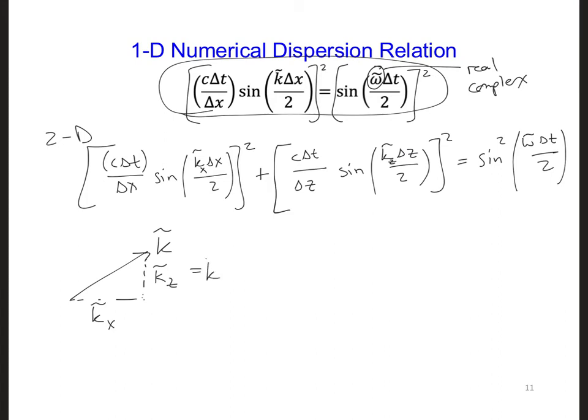So this would be equal to k sine of phi, if I define this as being phi, and this would be k cosine phi.